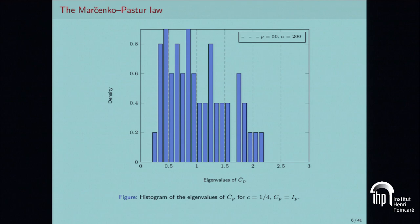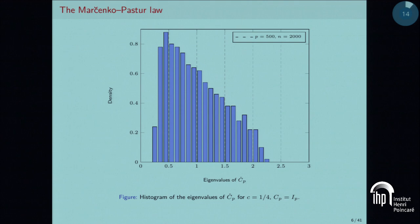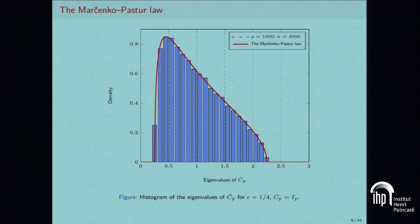Here I plot a histogram of the eigenvalues of Ĉ_p when n equals 4 times p. When you increase the size of p and n together proportionally — moving from 100/400 to 250/1000 to 500/2000 — you see a natural picture emerge, which was proved in 1967 by Marchenko and Pastur.